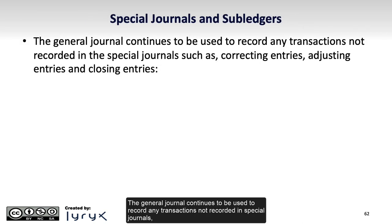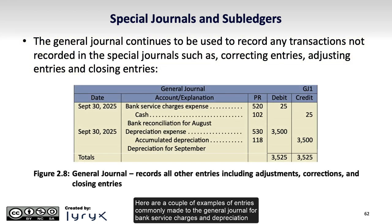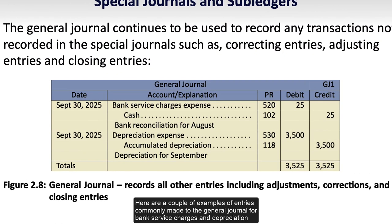The general journal continues to be used to record any transactions not recorded in special journals, such as correcting entries, adjusting and closing entries. Here are a couple of examples of entries commonly made to the general journal for bank service charges and depreciation expense.